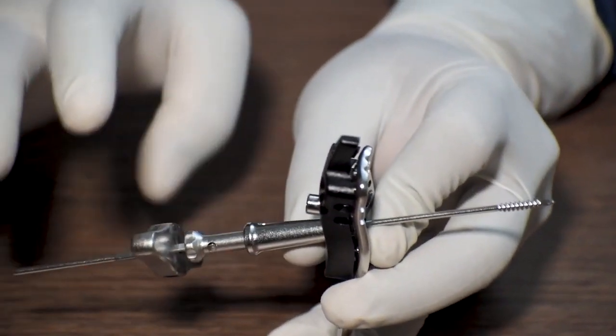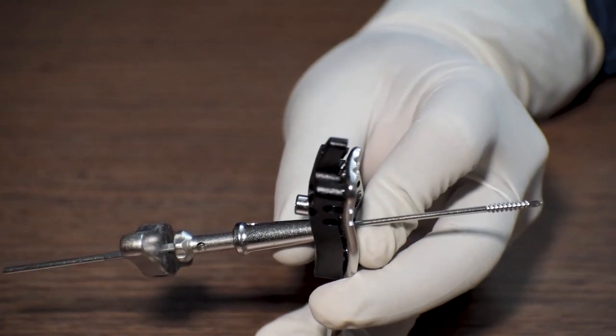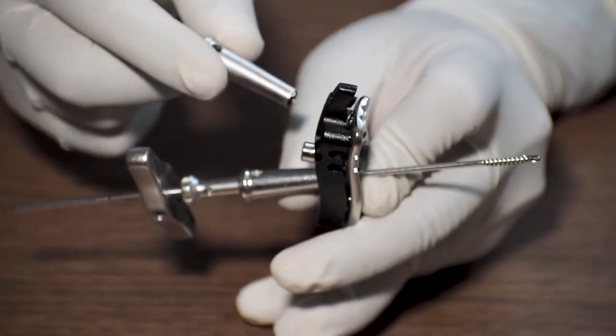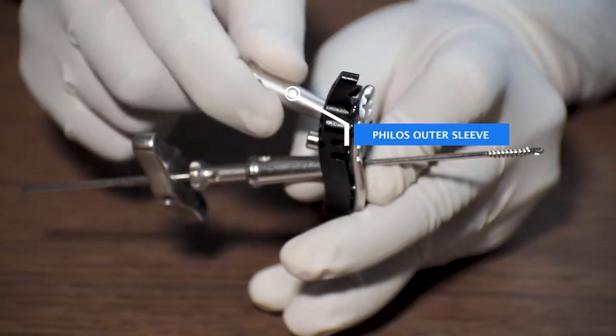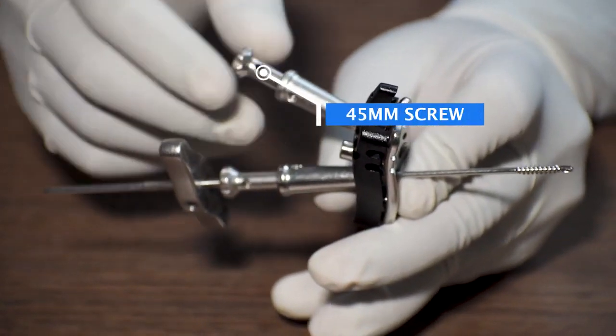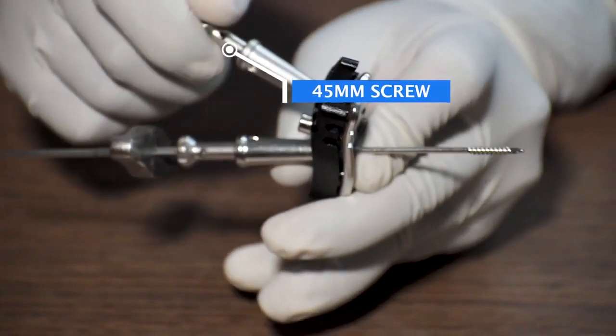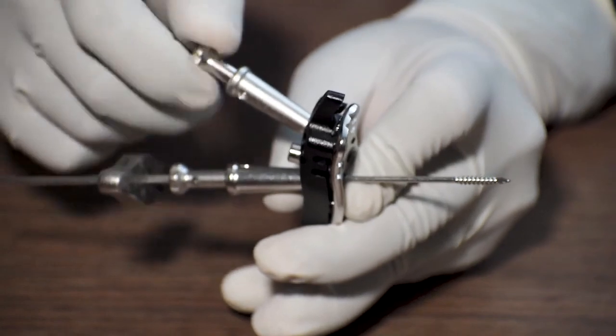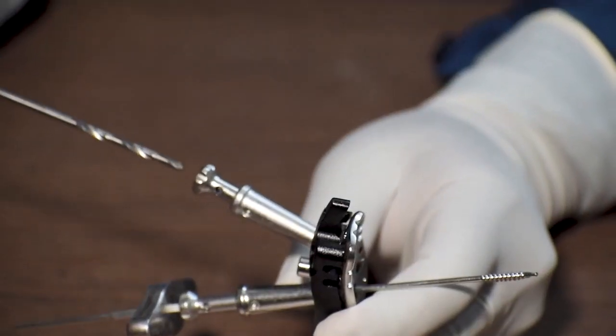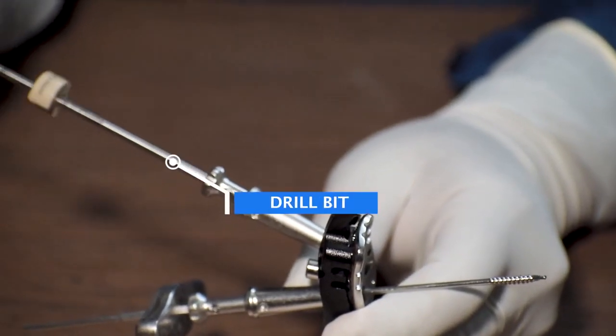After this procedure, we will attach another Phyllos outer sleeve in the jig in the desired hole. Then we will again attach a drill sleeve. Then we will use a drill bit to drill through this drill sleeve.